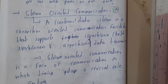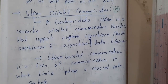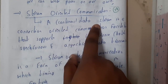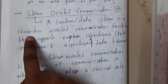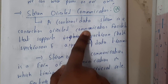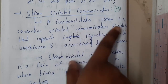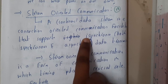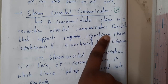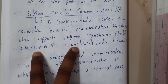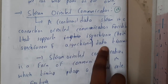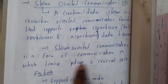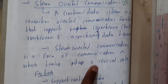Hello guys, we are back with our next lecture. In this lecture, let us go through the concept of stream-oriented communication. A continuous data stream is a connection-oriented communication facility that supports both synchronous and asynchronous data transmission.